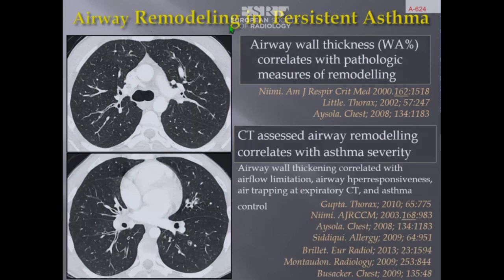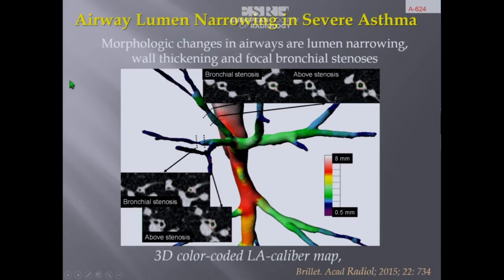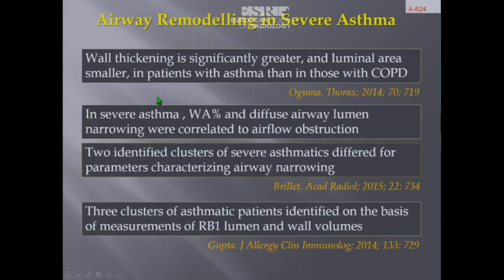Regarding airway remodeling, we can visualize and quantitatively measure thickening of the airway walls, which correlates with pathologic measures of remodeling. CT-assessed airway remodeling correlates with asthma severity. Quantitative imaging in asthmatics shows morphologic changes including lumen narrowing, wall thickening, and focal bronchial stenosis. Oguma showed that wall thickening is significantly greater and luminal areas smaller in patients with asthma than in COPD.